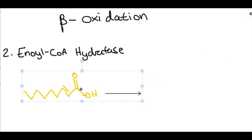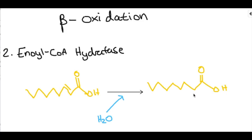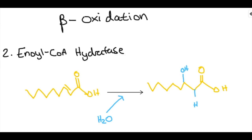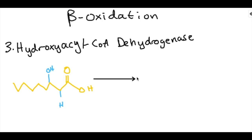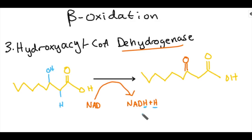Reaction 2 — enoyl-CoA hydratase: A water molecule is added across the double bond we just made. The OH adds to the beta carbon and the hydrogen adds to the alpha carbon. Reaction 3 — hydroxyacyl-CoA dehydrogenase: This uses NAD+, which gets reduced to NADH, acting on the hydroxyl group at the beta carbon.